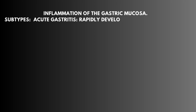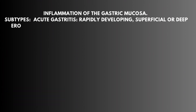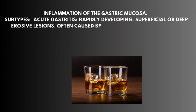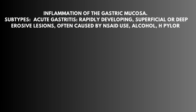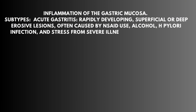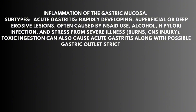The subtypes are acute gastritis — rapidly developing superficial or deep erosive lesions, often caused by NSAID use, alcohol, H. pylori infection, and stress from severe illness. Toxic ingestion can also cause acute gastritis, along with possible gastric outlet stricture.